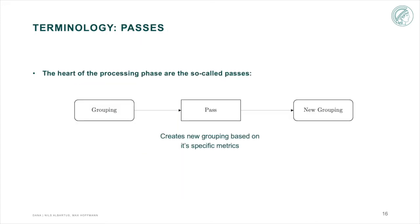Another important thing are passes, which are the heart of the processing phase. Each pass has a grouping as input and based on its specific metric, outputs a new grouping. The pass can either join or split existing registers into smaller ones.